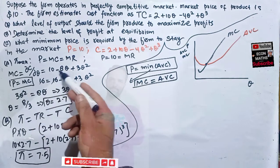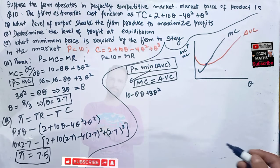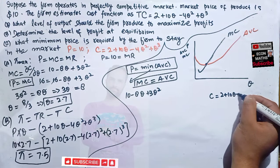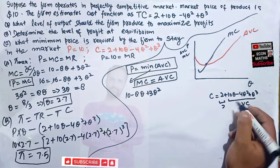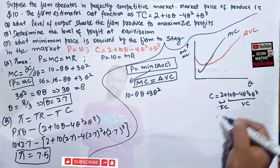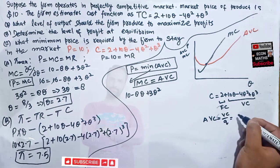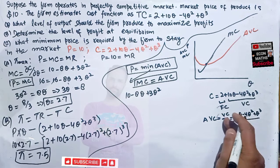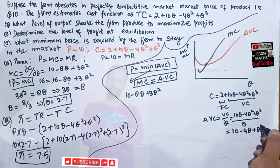Our marginal cost is 10 minus 8Q plus 3Q squared. Now we calculate average variable cost. Total cost is 2 plus 10Q minus 4Q squared plus Q cubed — the constant 2 is fixed cost, and the rest is variable cost. Dividing variable cost by Q gives AVC equals 10 minus 4Q plus Q squared.